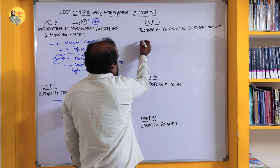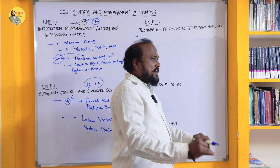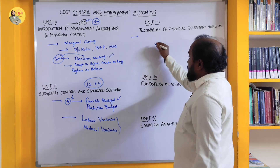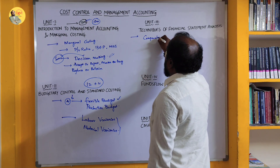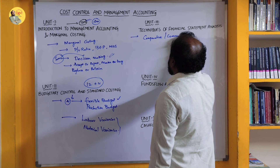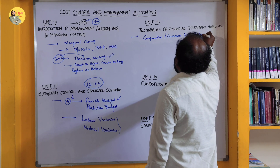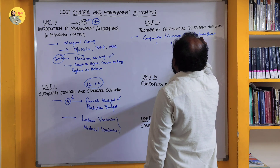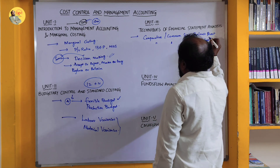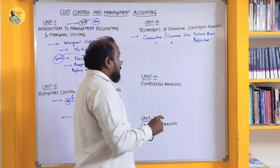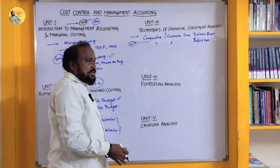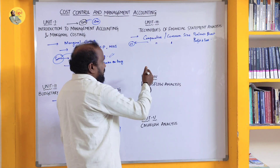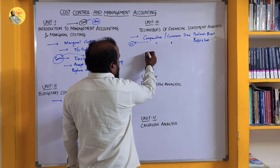Coming to Unit 3 — Techniques of Financial Statement Analysis — this unit is for those who just want to pass. From this unit, Comparative Statement and Common Size Statement will be asked. You can choose either the Balance Sheet or the Profit and Loss Account version. A 12-mark question from Comparative or Common Size Statement is a sure question — damn sure. It's a simple question: you are given data year-wise, compare it, and calculate the percentage.